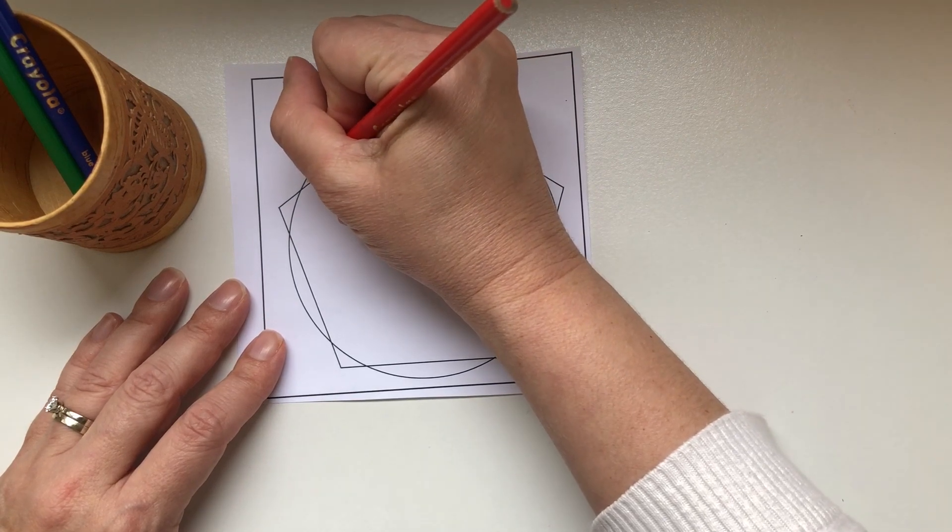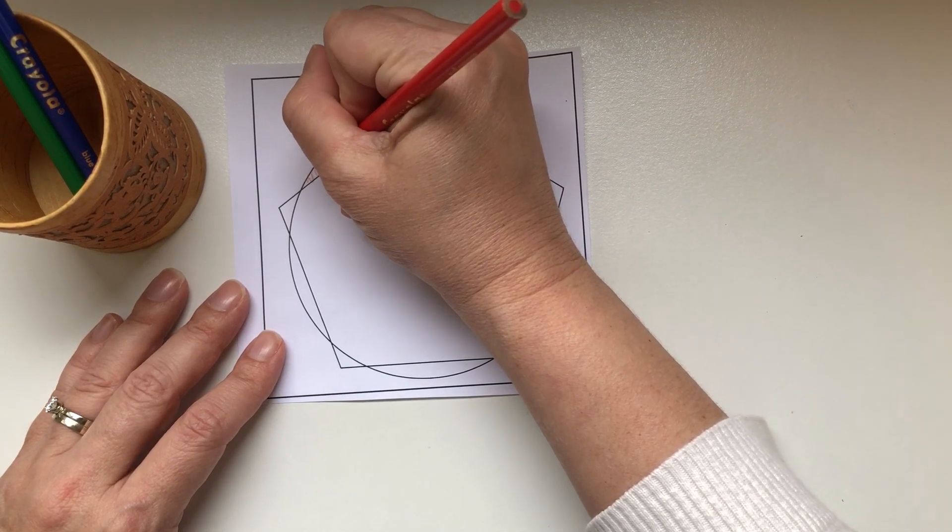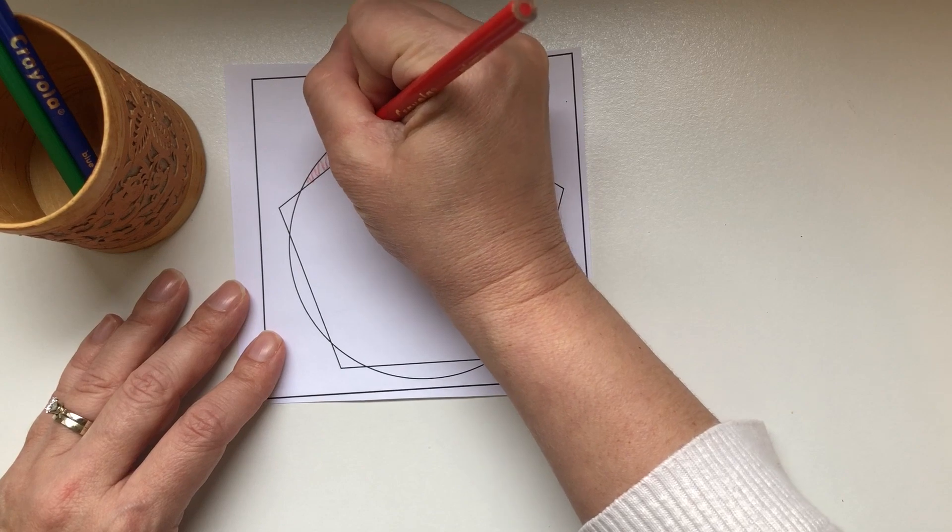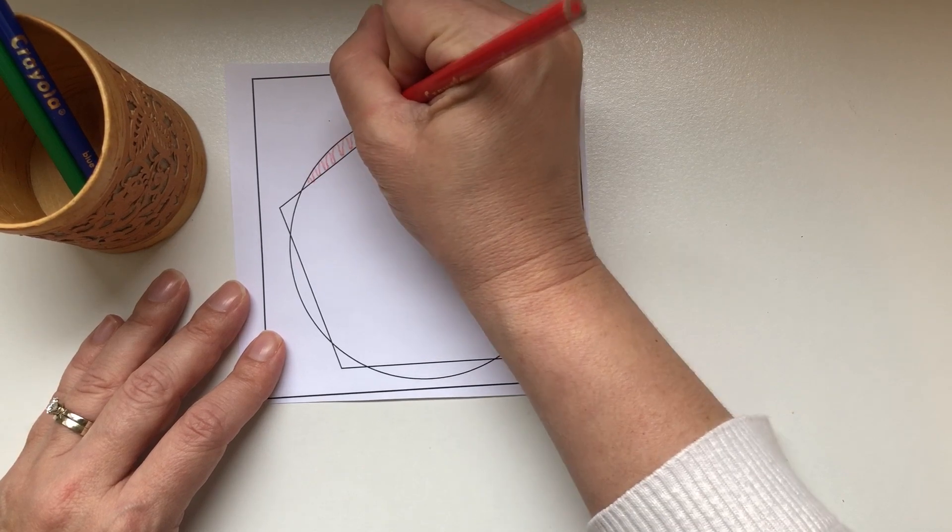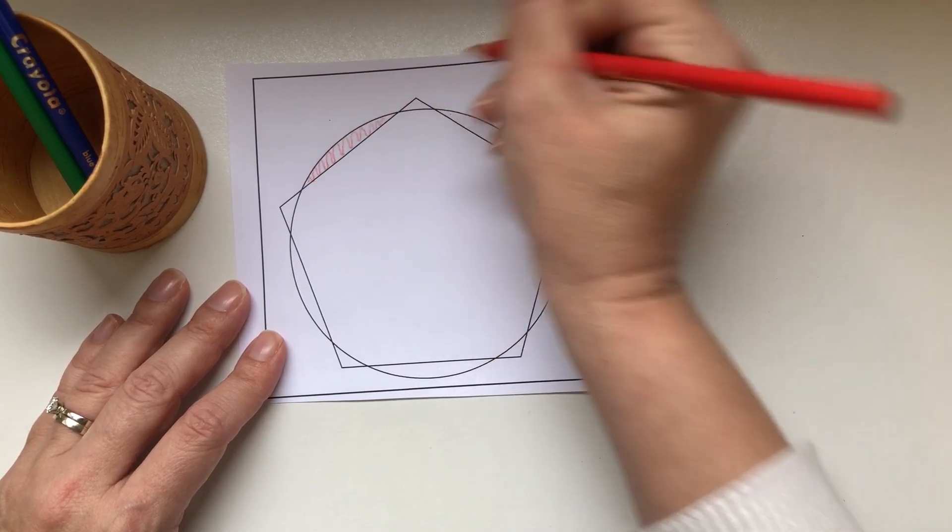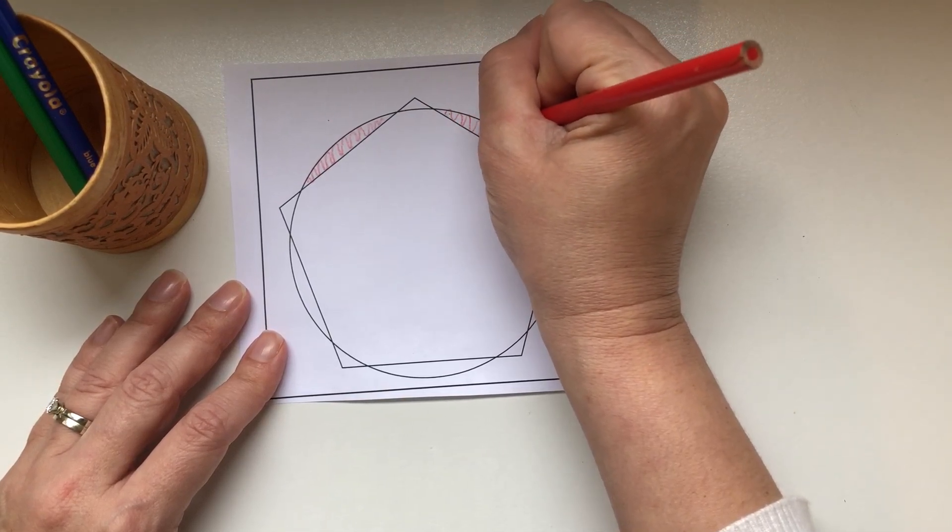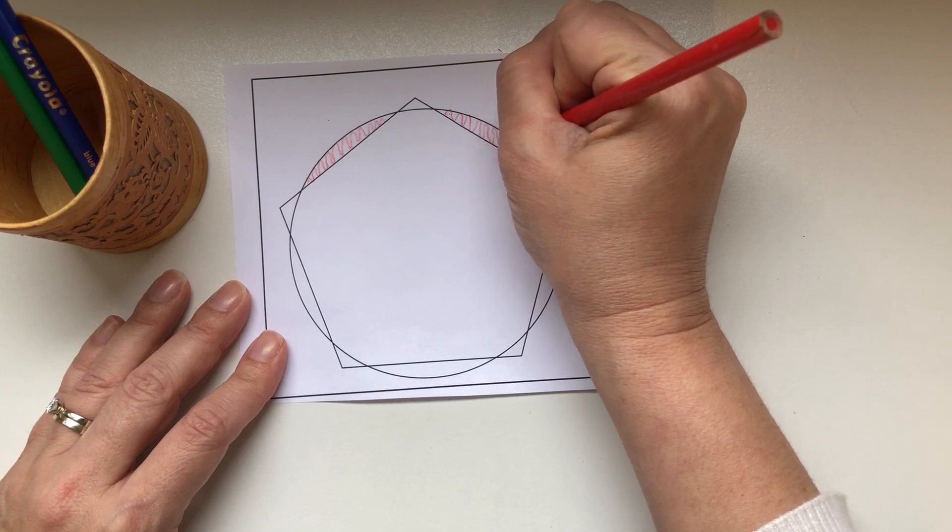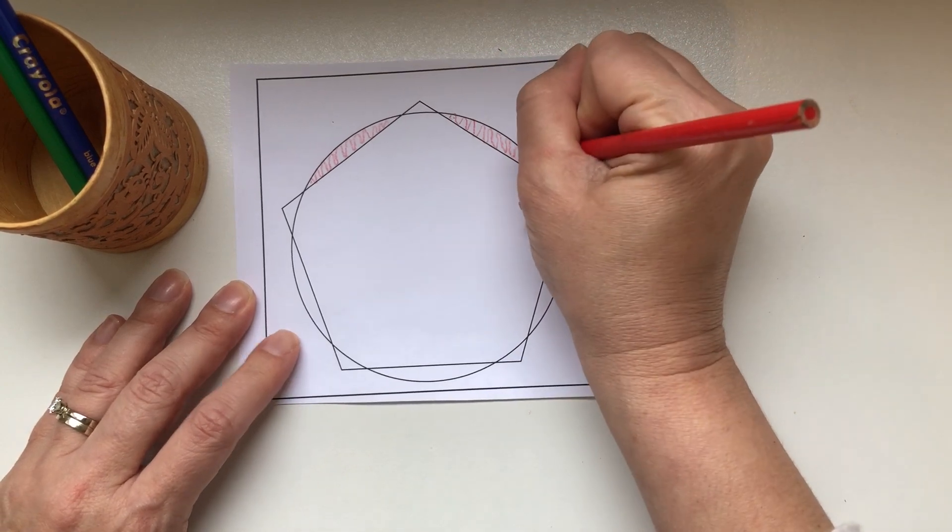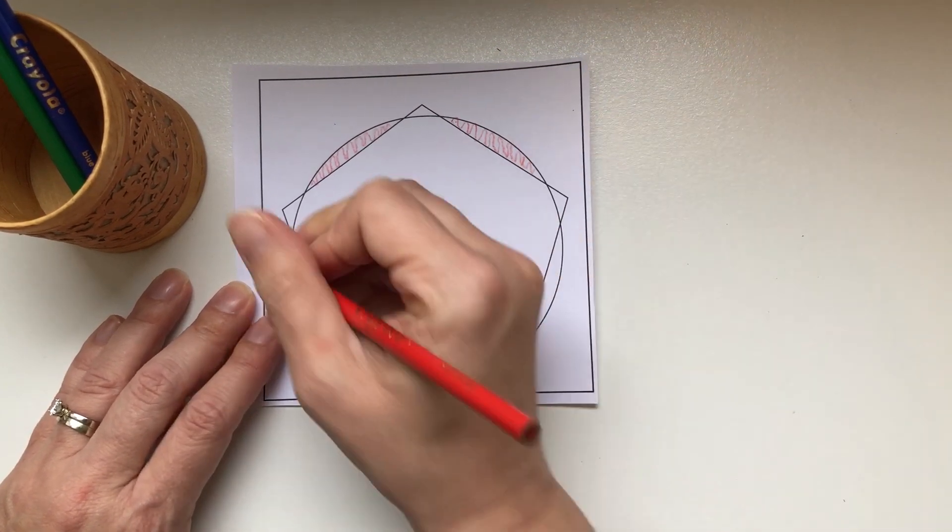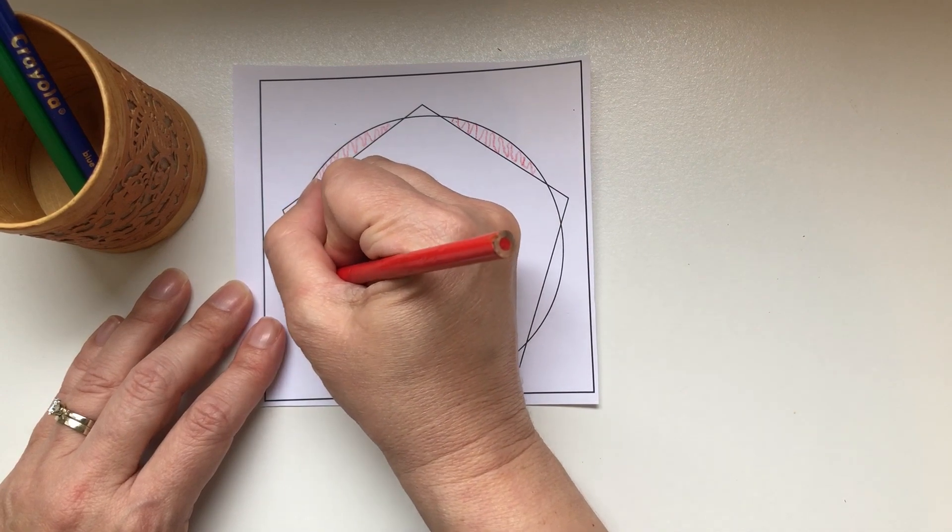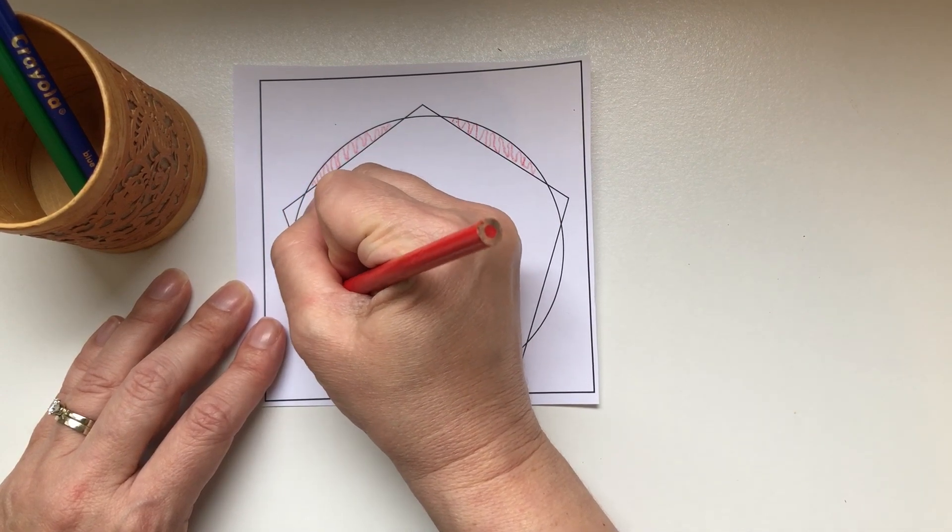So I'm going to use red to just do the serpentine line inside the part of the circle that is not also in the pentagon. Up and down, and so you would do that all the way around the shape.